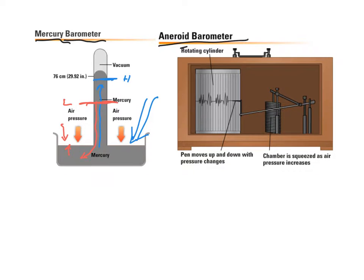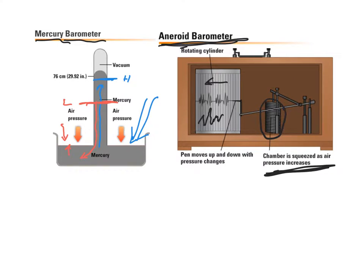The aneroid barometer has a rotating cylinder that turns and records changes in pressure over time. The way it works is we have a chamber of air, and as pressure increases this chamber gets smaller. Through a series of pulleys and levers it causes the pen to rise up for high pressure and then drop back down for low pressure.